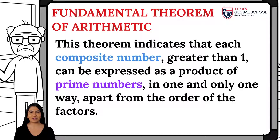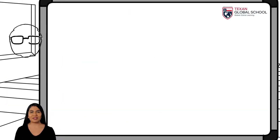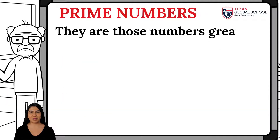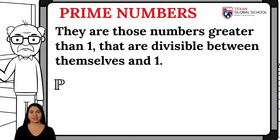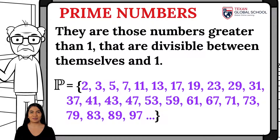The Fundamental Theorem of Arithmetic indicates that each composite number greater than one can be expressed as a product of prime numbers in one and only one way, apart from the order of the factors. Remember that prime numbers are those greater than one, divisible by themselves and by one.